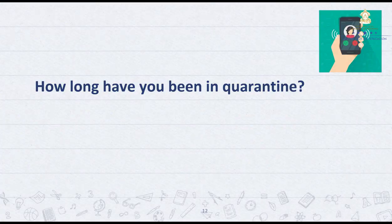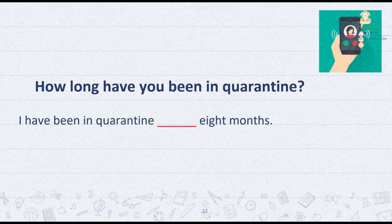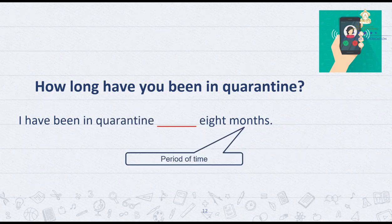How long have you been in quarantine? I have been in quarantine for 8 months. 8 months is a period of time, so we use 'for'. I have been in quarantine for 8 months.